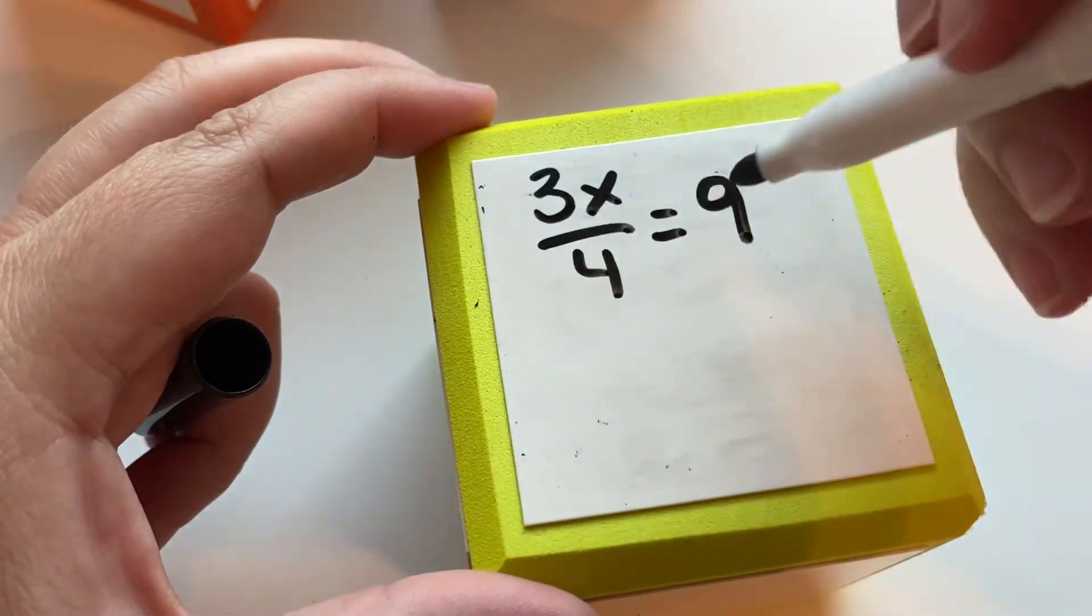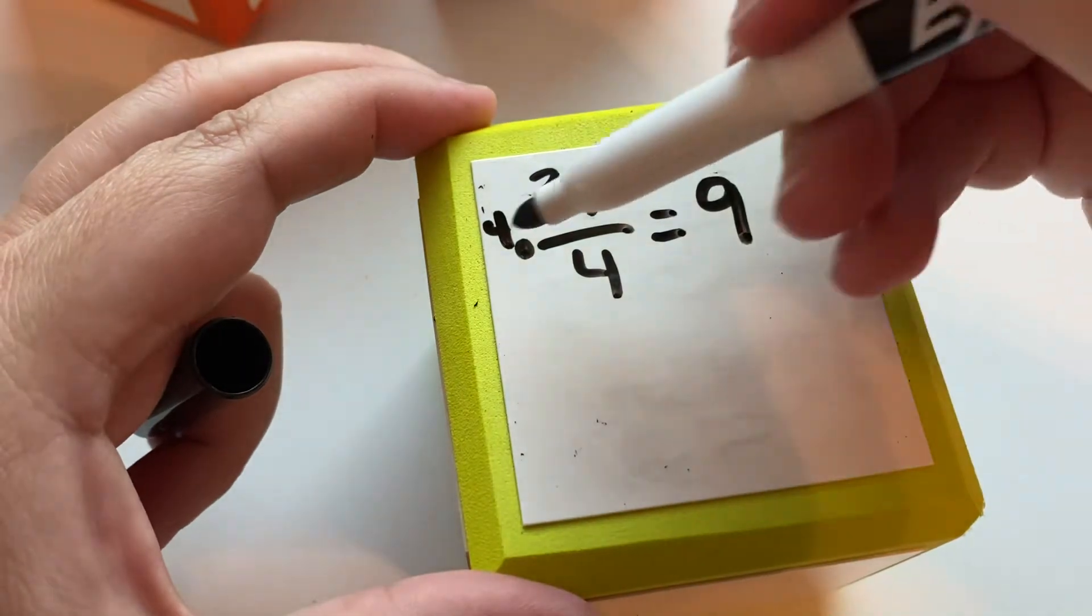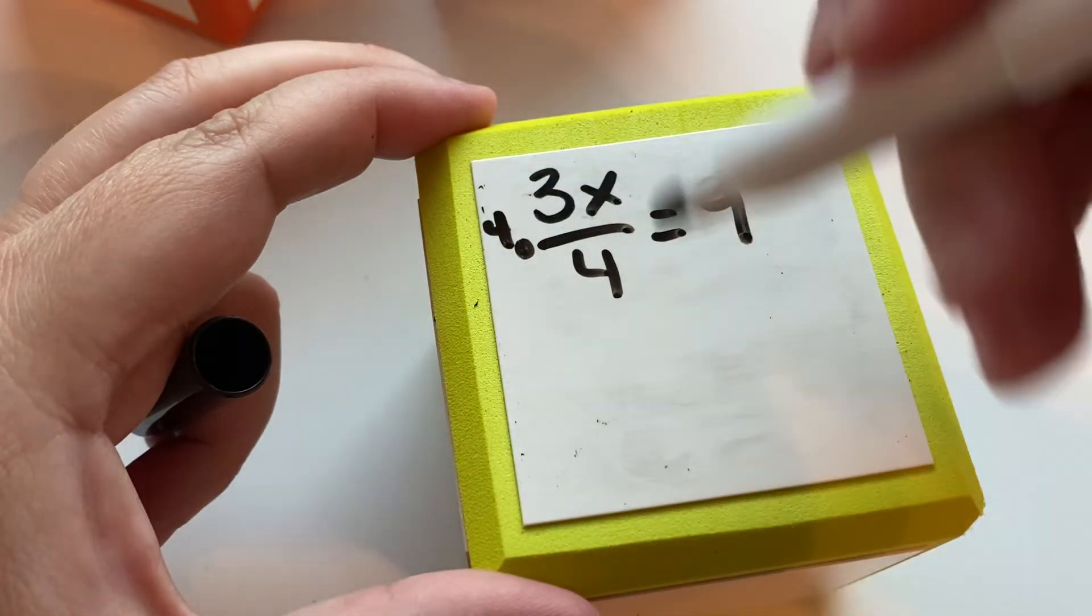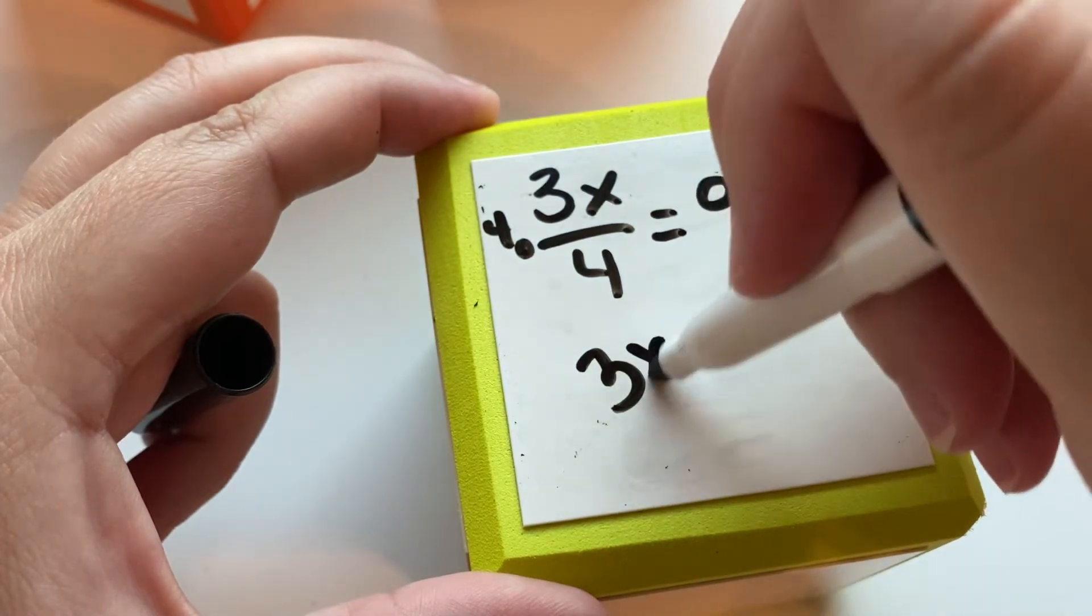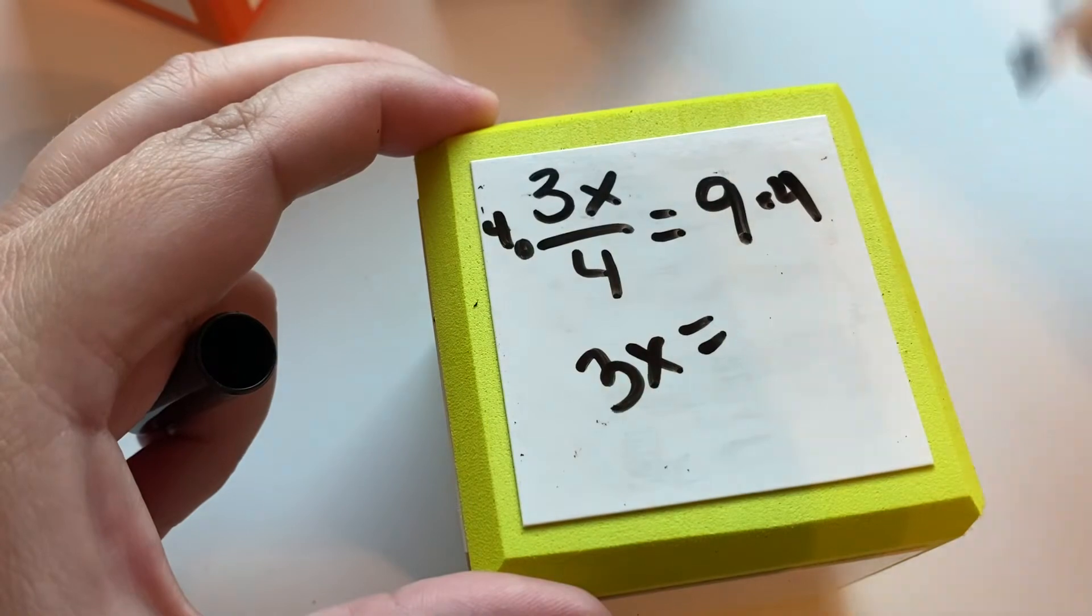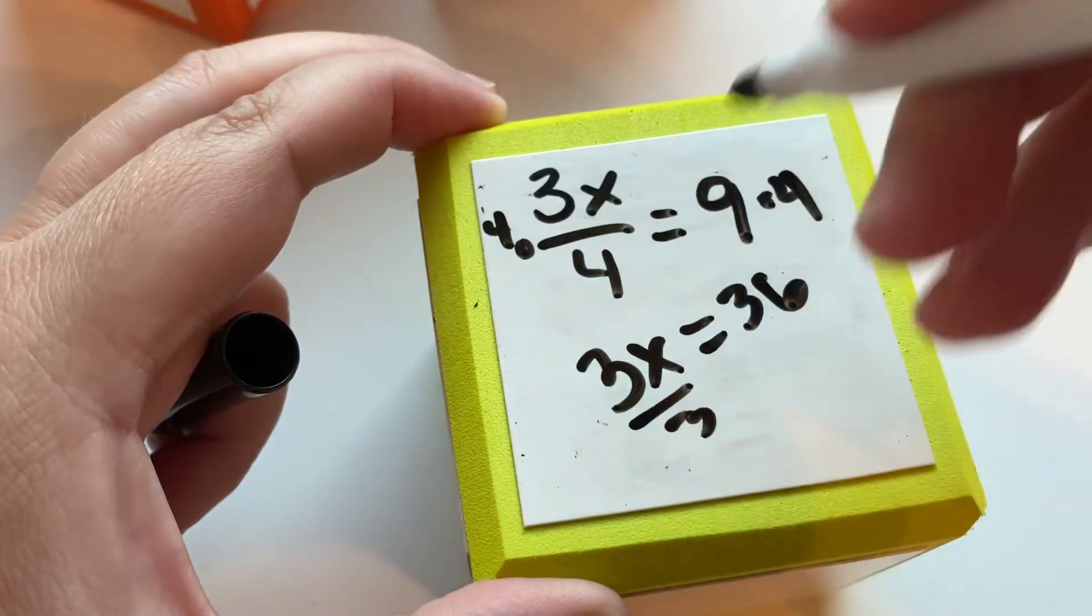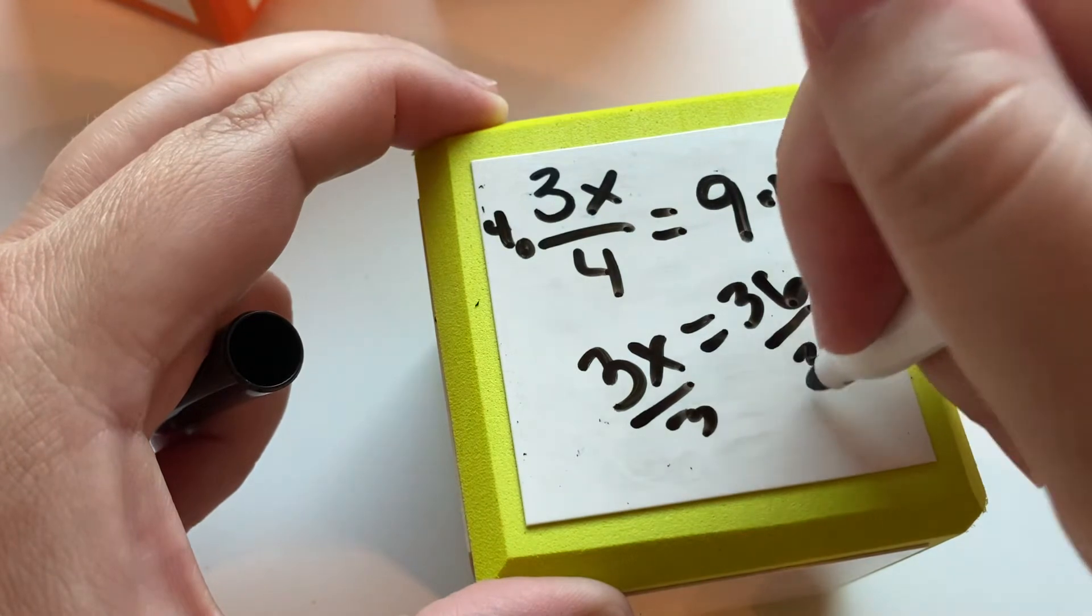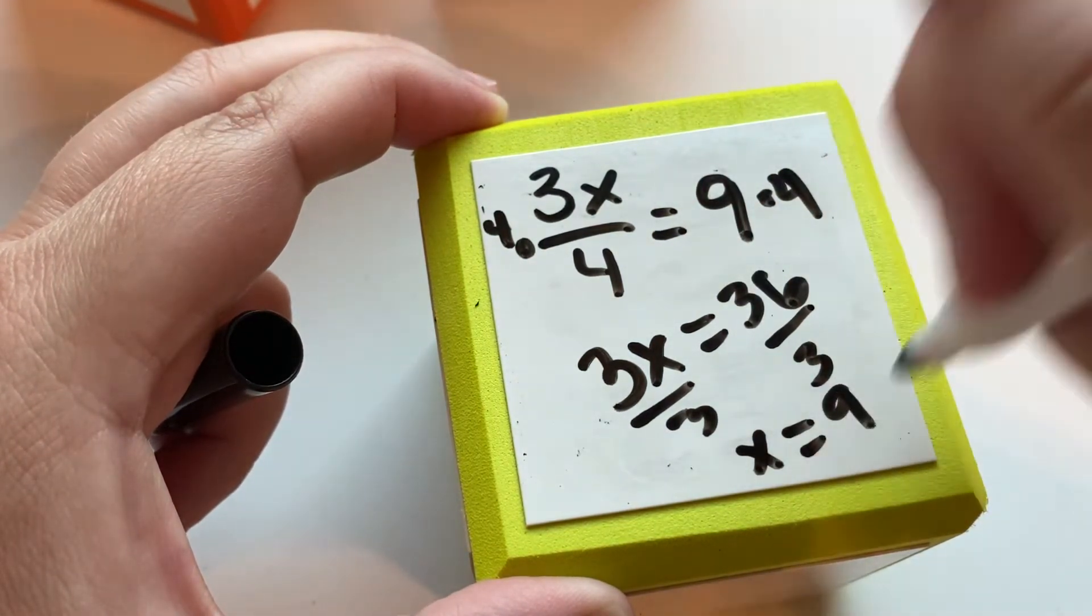We're going to work with the division first, which means we're going to multiply by 4. The 4 and the 4 will make 1. So you get 3x equals, multiply this side by 4, 36. Divide both sides by 3, and x equals 9.